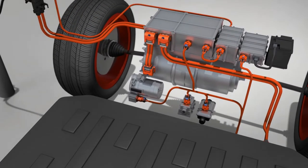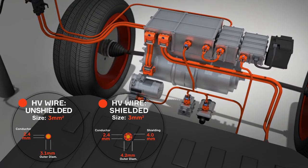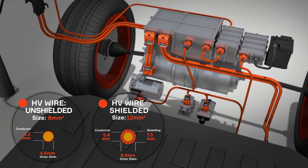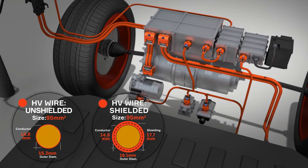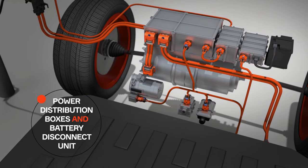Aptiv provides vertical integration for all high-voltage cabling, which are made in-house in all regions of the world, from 3 to 95 square millimeters. And we distribute high-voltage power via our power distribution boxes and battery disconnect units.